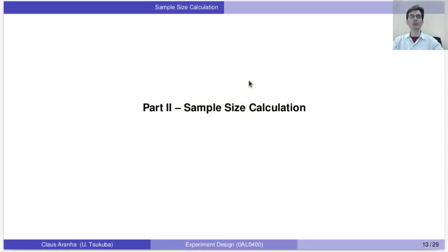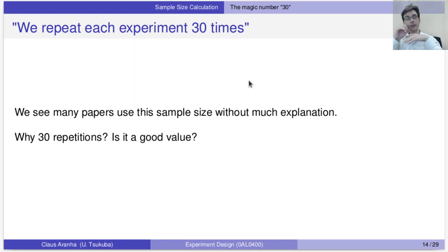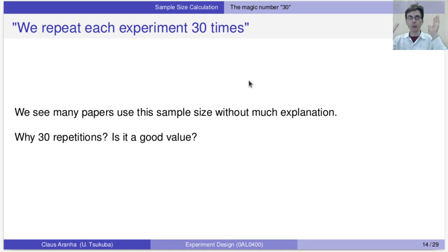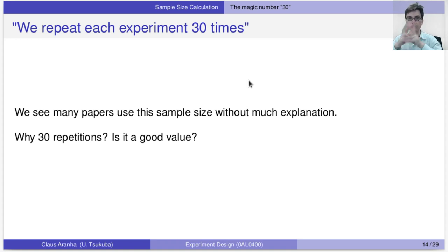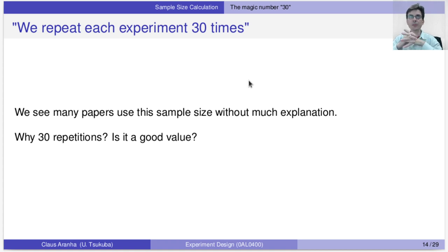We're going to talk about sample size calculation. A lot of people have heard of the magic number 30 — we repeat each experiment 30 times. So some people think, can I just use 30 repetitions? Do I really need to calculate sample sizes? Is it okay to use 30? Is it a good value? Why do so many people repeat the experiment 30 times? Why is it common?